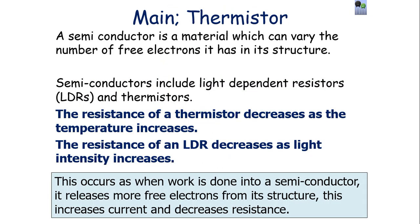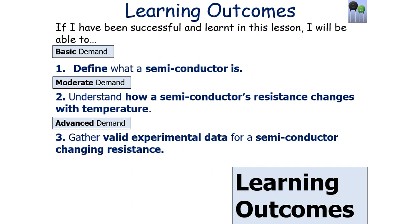To summarise today's lesson: a semiconductor is a material which can vary the number of free electrons it has in its structure and in the electrical circuit. Semiconductors include LDRs and thermistors. The resistance of a thermistor decreases as temperature increases, and the resistance of an LDR decreases as light intensity increases. These relationships occur because when work is done to a semiconductor, it releases more free electrons, increasing the current and therefore decreasing the resistance.